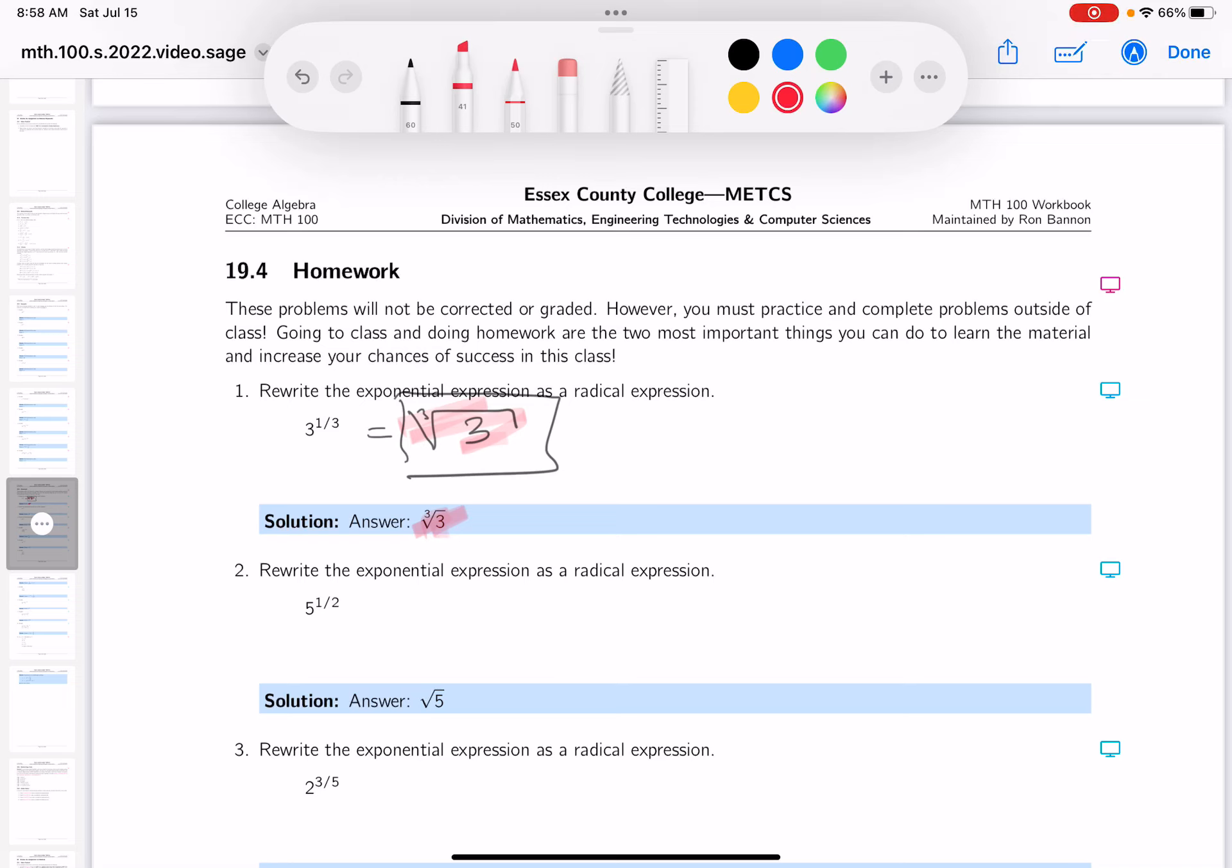Okay, number two is really the same thing as number one, but it's a different radical. It's a square root radical. The convention for this is to use the radical notation, but we don't put the index down, so it's the square root of five. Again, there should be a two there, but convention has it we don't put the two there. We just write this down, same meaning.